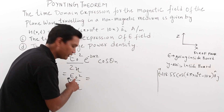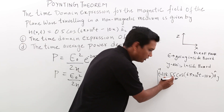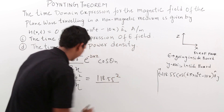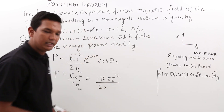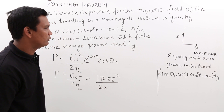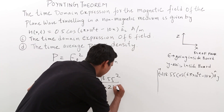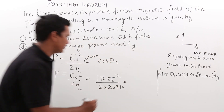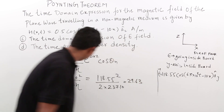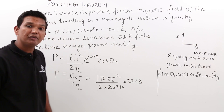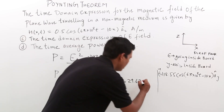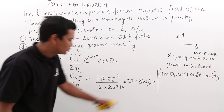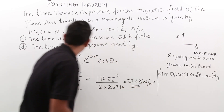Substituting the values: E₀ = 118.55 and eta = 237.10, the time average power density is 118.55² / (2 × 237.10). Solving this gives 29.63 watts per meter squared. This is the time average power density, expressed in W/m² since we are talking about average power density per unit area. With this, the D part of the problem is also concluded.